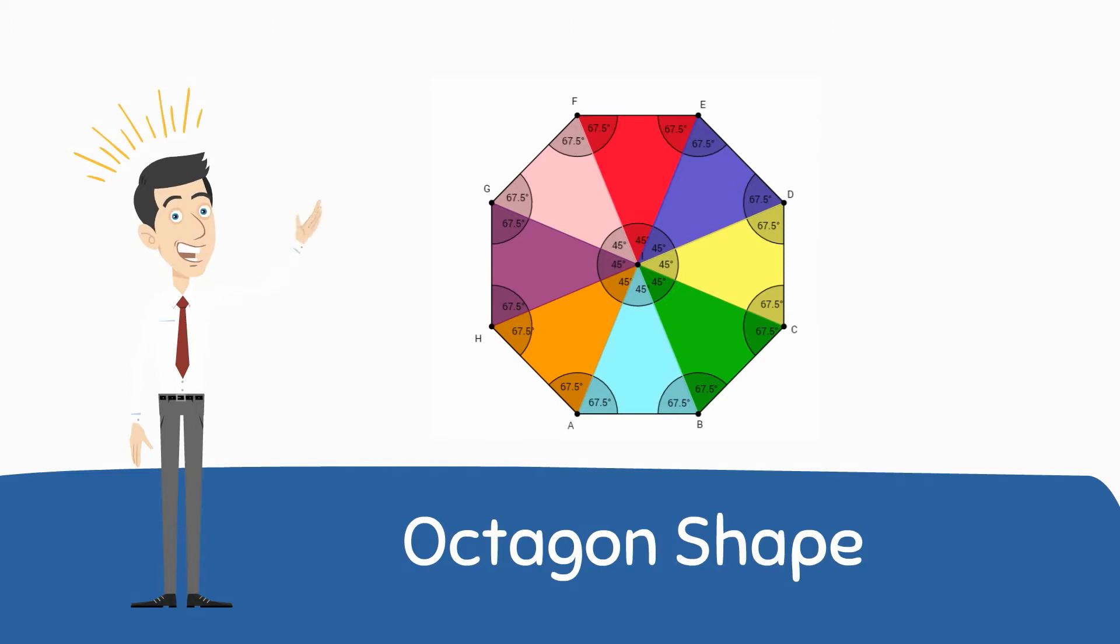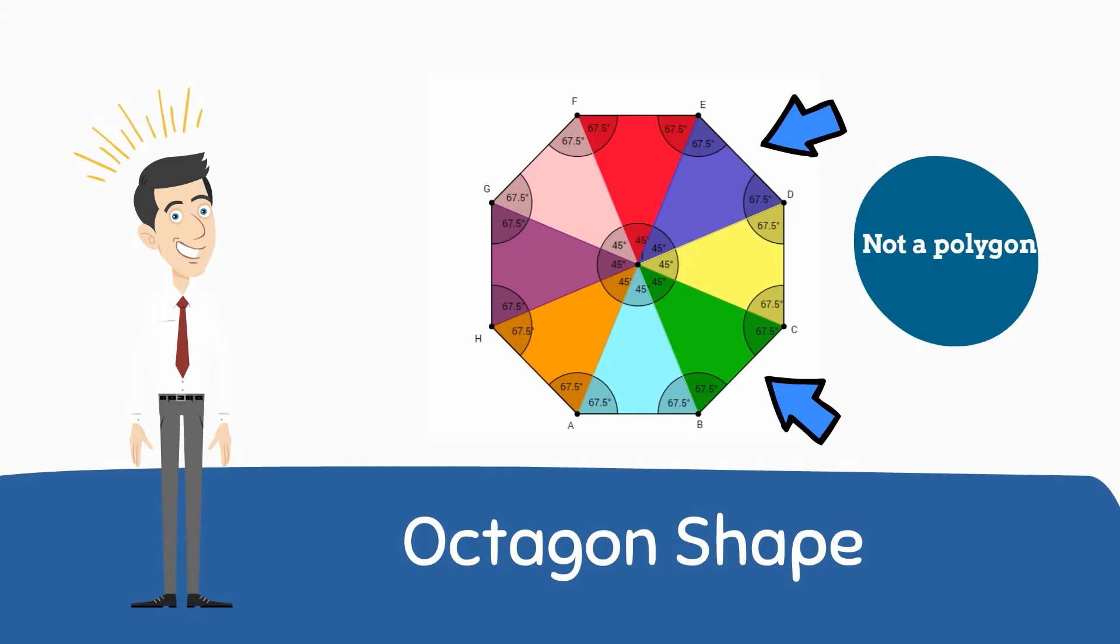That means that it has straight lines, is a closed figure, and no curves. Circles and shapes that include curves are not polygons.